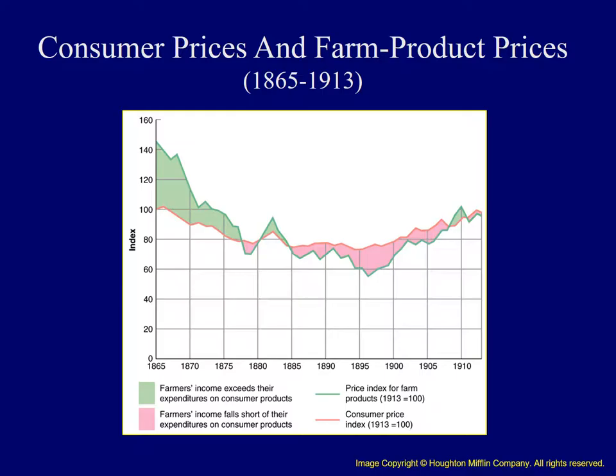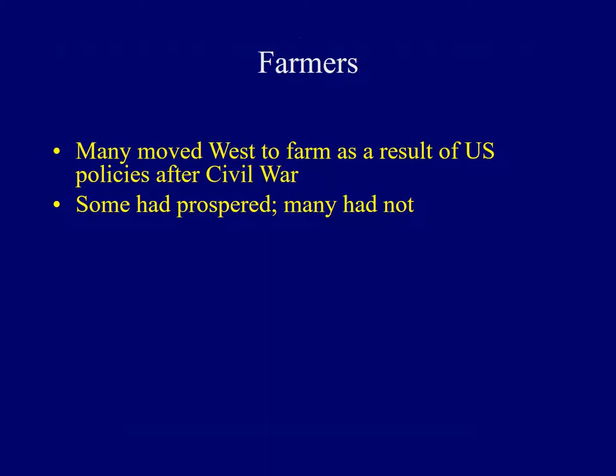Farmers faced a variety of different problems in the late 1800s as shown by this table. The green areas indicate where farmers had enough income to pay for their expenses; however, the pink area shows where their income fell short. Beginning in the mid-1880s, we see several years in a row where farmers didn't make enough money to pay their bills.